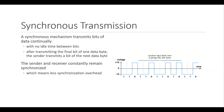A synchronous mechanism transmits bits of data continually with no idle time between bits. After transmitting the final bit of one data byte, the sender transmits the next data byte without start or stop bits. The chief advantage of synchronous mechanisms is that the sender and receiver remain synchronized, which means less synchronization overhead. Synchronous transmission sends data as one long bit stream or block of data with no gaps in transmission.